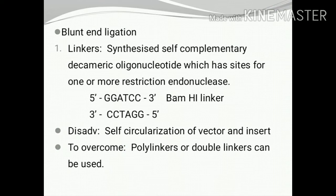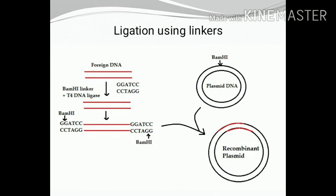There are three methods for blunt-end ligation. The first one is using linkers. Linkers are synthesized self-complementary decameric oligonucleotides which have sites for one or more restriction endonucleases. In the figure you can see a BamHI linker. The disadvantage of using a linker is self-circularization of the vector and insert. In order to overcome this, you can use poly-linkers or double linkers — that is, two different linkers can be used.